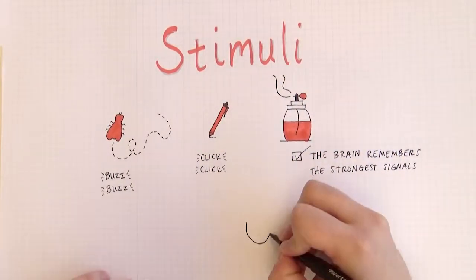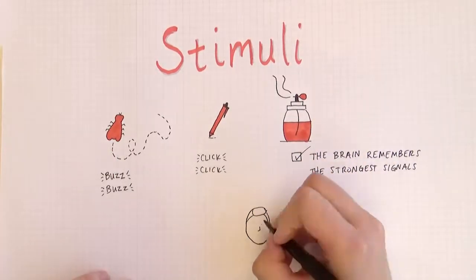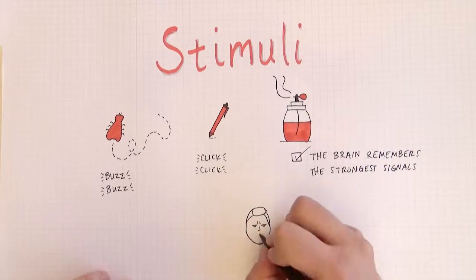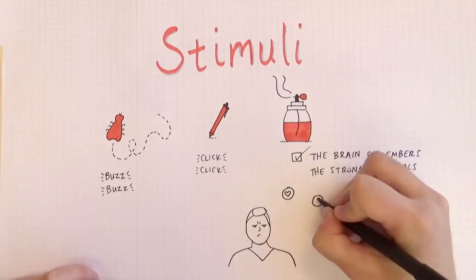Your sensory register takes in all these signals bombarding your system. The brain can't process all these signals at the same time. It shifts attention between signals. You'll only remember the signals you pay attention to.